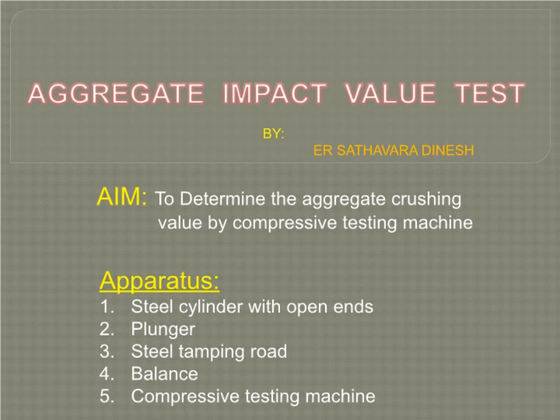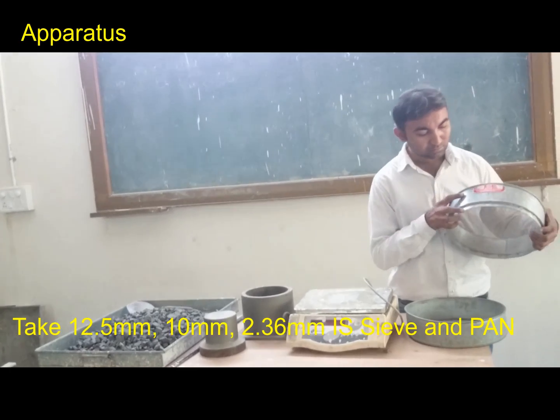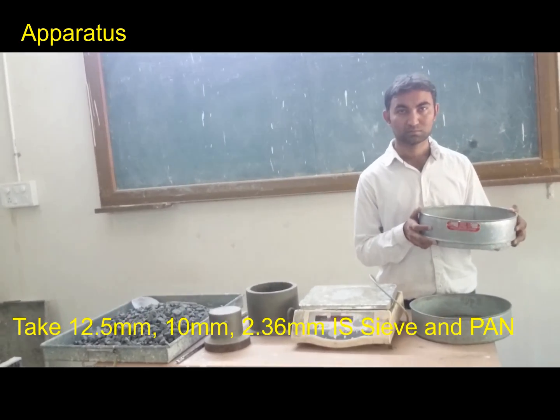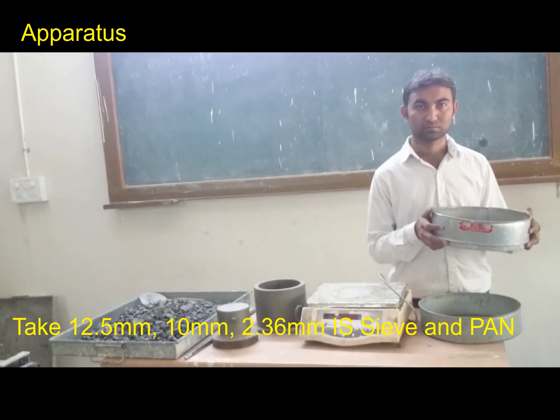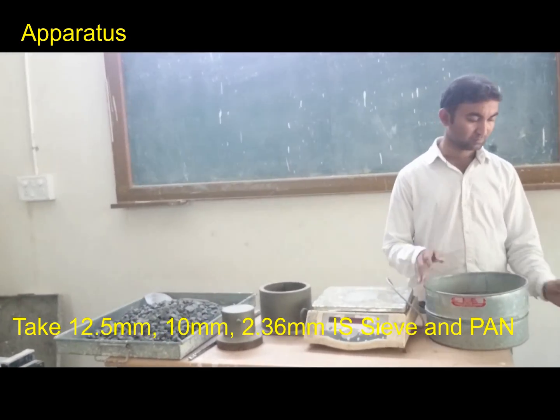Apparatus: steel cylinder with open end, plunger, steel tamping rod, balance, compressive testing machine. Plunger of 15 cm diameter, steel cylinder of 15.2 cm diameter and 40 cm height, cylindrical measure with 18 cm height. Take 12.5 mm, 10 mm, and 2.36 mm IS sieves and pan.